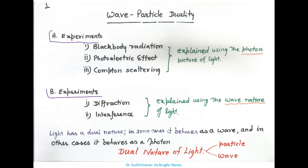So there are two concepts of light: one is related to the photon as a particle, and the second is related to the wave nature. Light has a dual nature — in some cases it behaves as a wave, and in other cases it behaves as a photon. This dual nature means one is particle nature and the other is wave nature, which is why we say it is duality.